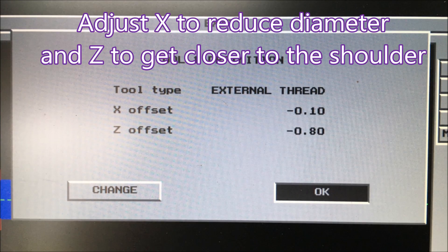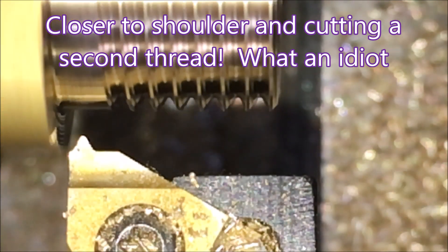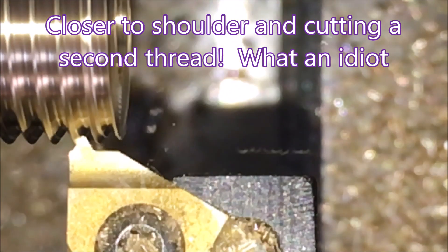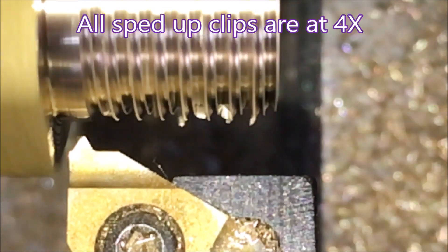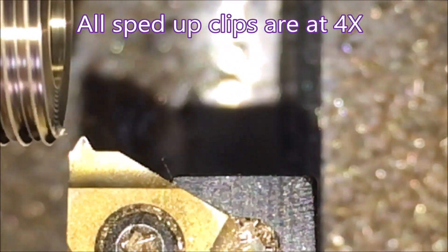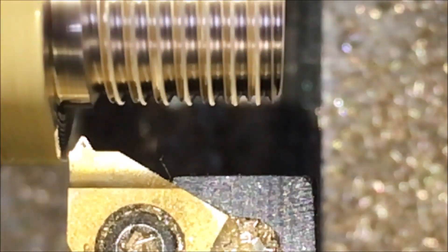So I went in and I changed the X and the Z offset, and I will regret it. Because as you can see, it's moved closer to the edge but it's also cutting a second thread. How ridiculous! Why my brain didn't say don't do that, I have no idea.